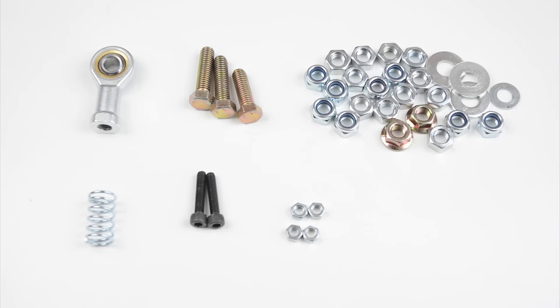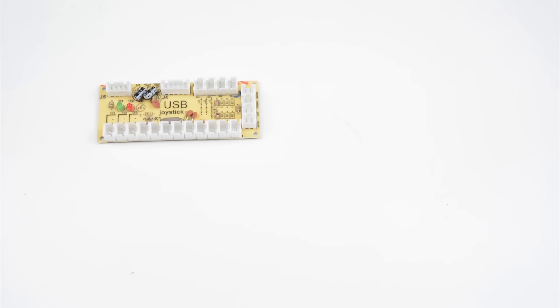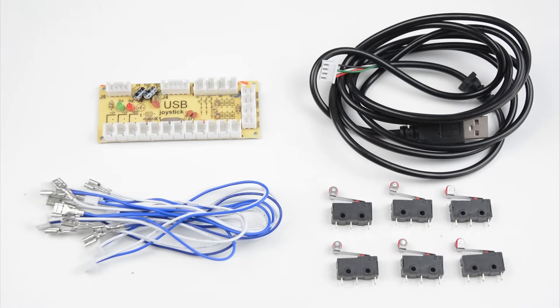M5 bolts and nuts, and four bearings. Four M8 threaded rods cut at a length of 10cm and one cut at 20cm. For the electronics we will need one USB encoder with the provided cables and six micro lever switches.